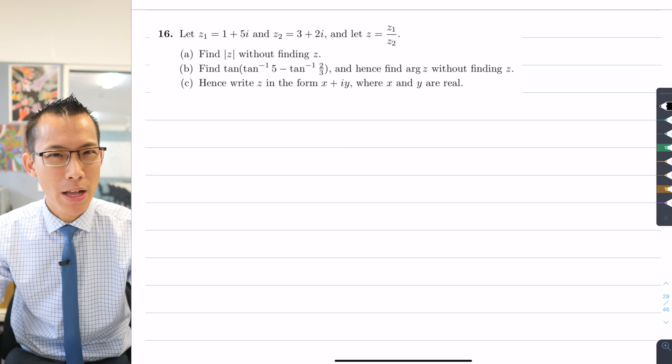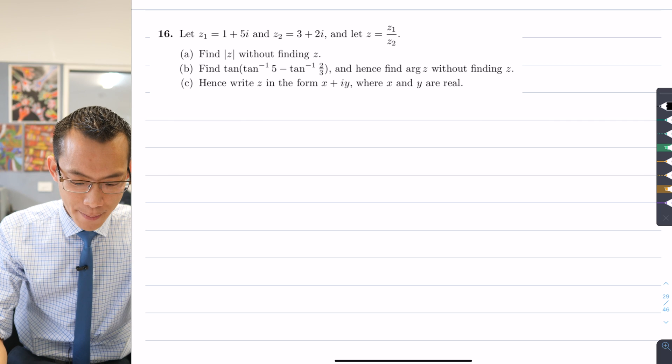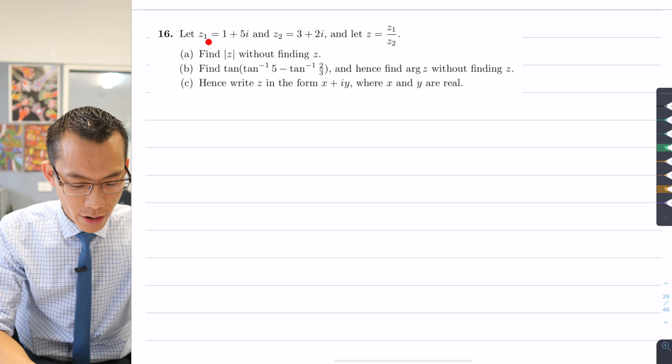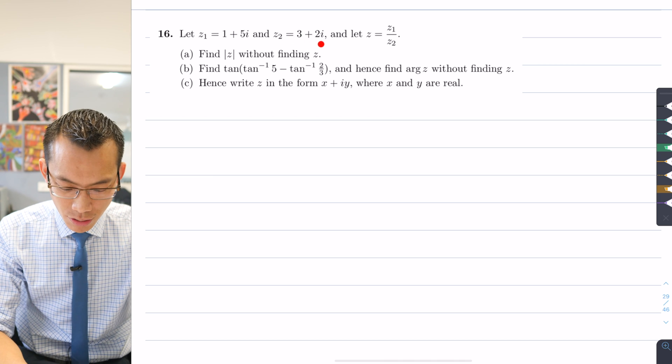So let's have a look at the question and try to unpack what's going on. They introduce to you a couple of complex numbers on the plane: you've got z1 over here, 1 plus 5i, and z2, 3 plus 2i.